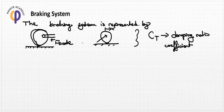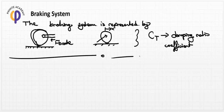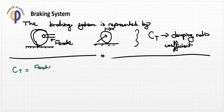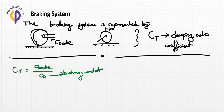How CT represents the brake is the key point. CT equals F_brake divided by CB, where CB is the braking constant. When CT is zero there is no braking. As F_brake increases, CT increases, the damping ratio increases, energy loss increases, and the wheel slows down.